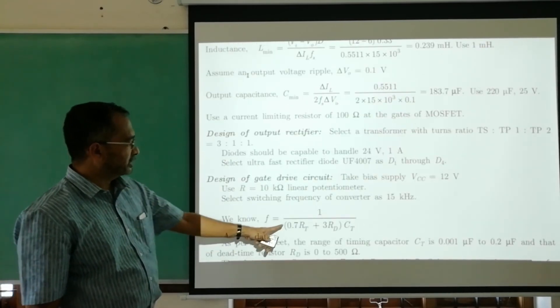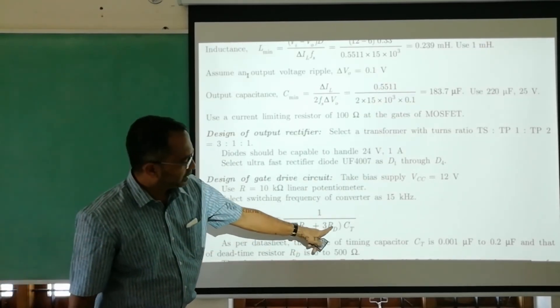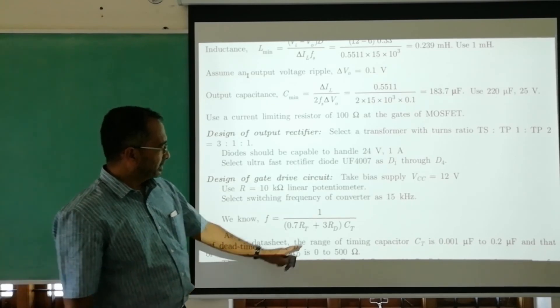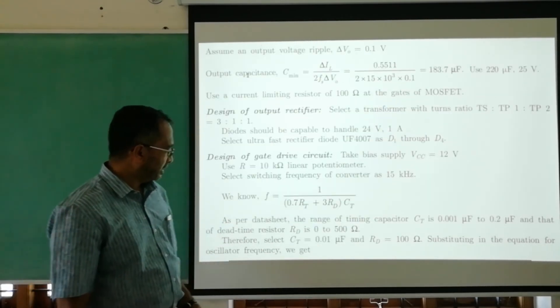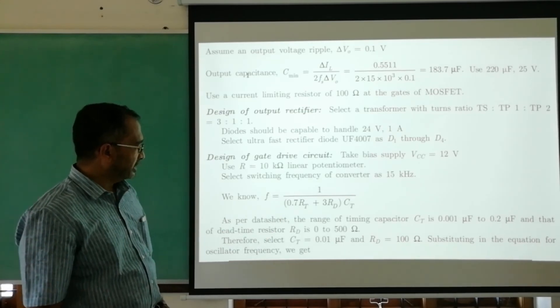For the gate drive circuit, using the equation and putting RT about 100 ohms and CT 0.1 microfarad, we get a value for RT of 9.1 kilohms, so we select a 10 kilohm resistance.